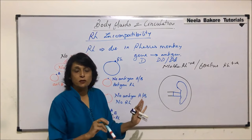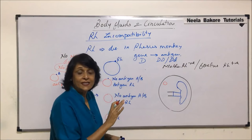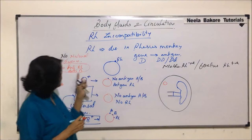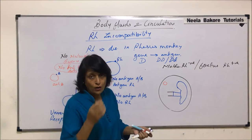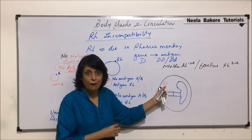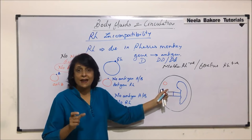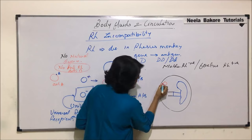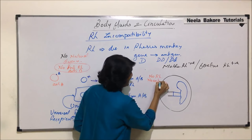Let us see the situation on the RBC. The mother is RH negative, meaning there is no RH factor on her RBCs. At the same time, we said there is no natural defense. So for this female, RH antigen is going to be a foreign particle — she should be having anti-RH ready in her body. But since there is no defense against this antigen, her body is without the antigen and without the antibody. So in the body of the female, there is no RH and no anti-RH.